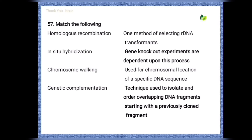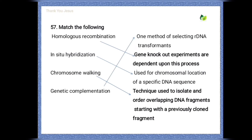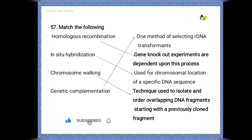Match list 1 with list 2: homologous recombination is related to gene knockout experiments, which are dependent upon this process. In situ hybridization is used for chromosomal location of a specific DNA sequence. Chromosome walking is a technique used to isolate and order overlapping DNA fragments starting with a previously cloned fragment. Genetic complementation is one method of selecting recombinant DNA transformants.